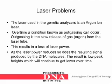The laser used in the genetic analyzers is an argon-ion laser. Over time, a condition known as outgassing can occur. Outgassing is the slow release of gas from the laser tube, resulting in a loss of laser power. As the laser power reduces, so does the resulting signal produced by the DNA molecules. The result is low peak heights, which will continue to get lower over time.